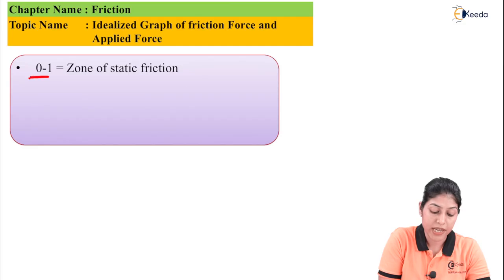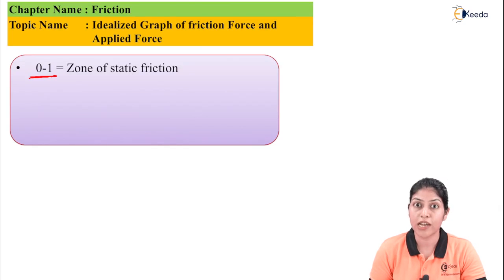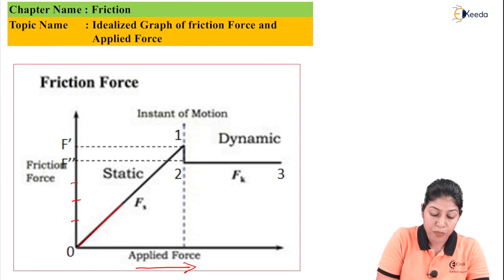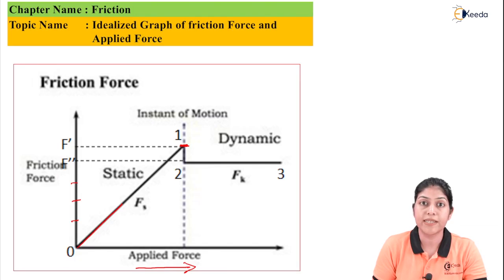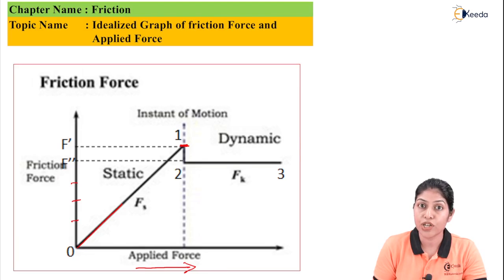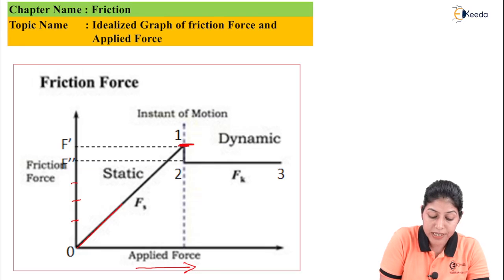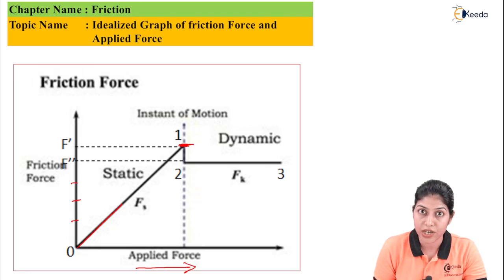The zone 0 to 1 is represented as the zone of static friction, where the value of friction is continuously increasing. Point 1 represents the condition of maximum friction. Maximum friction is generally considered at impending motion — where the body tends to start motion, the body is just about to move. At that particular condition the friction value is maximum because the contact between the surfaces is maximum. From that point, the contact between the surfaces will reduce. So point 1 represents the impending motion condition.